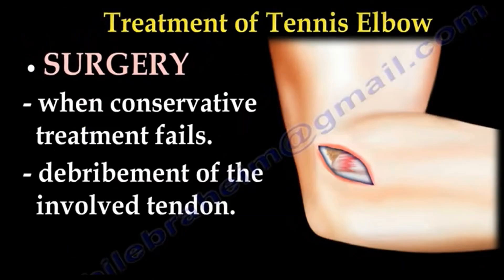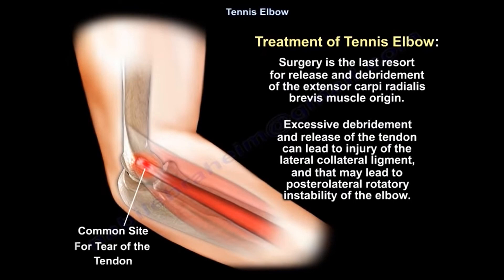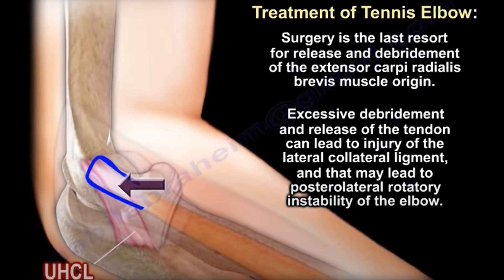Surgery is the last resort. When conservative treatment fails, the surgery entails debridement of the involved tendon. Excessive debridement and release of the tendon can lead to injury to the lateral collateral ligament and may lead to posterolateral rotatory instability of the elbow. You can see that important ligament marked by the arrow — it is very close to the extensor carpi radialis brevis muscle origin, so when we release and debride that tendon, we may injure that ligament and create elbow instability.